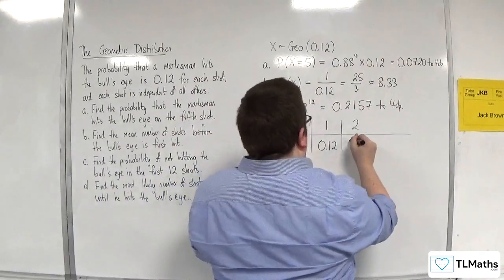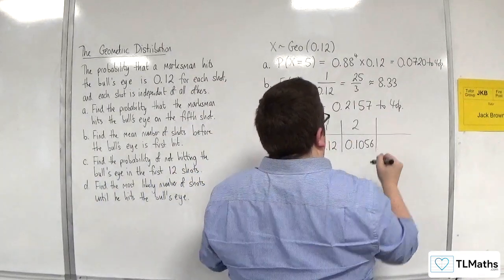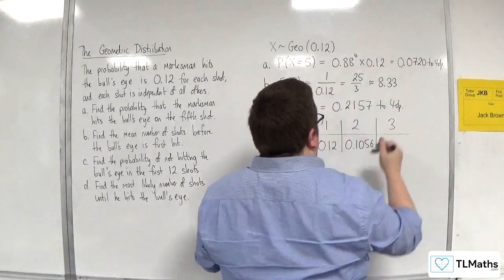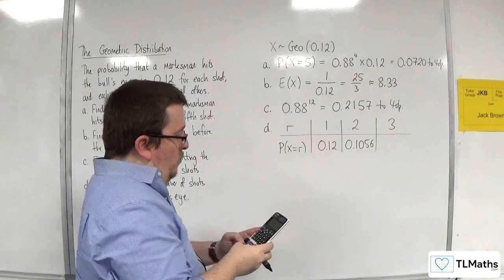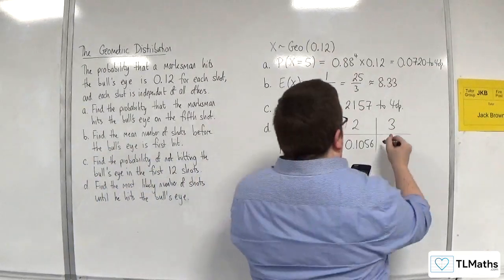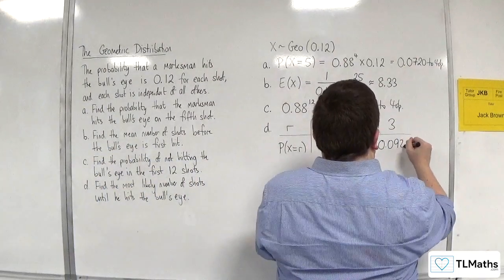The probability that he hits it on the second shot is 0.88 times 0.12. And so, that's 0.1056. The probability that he gets it on the third shot will be 0.88 squared times 0.12. And that gets us 0.092928.